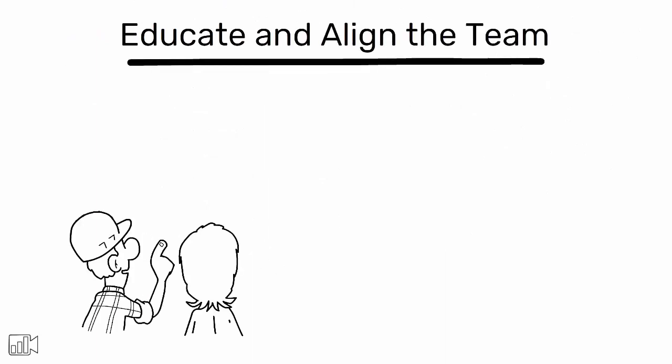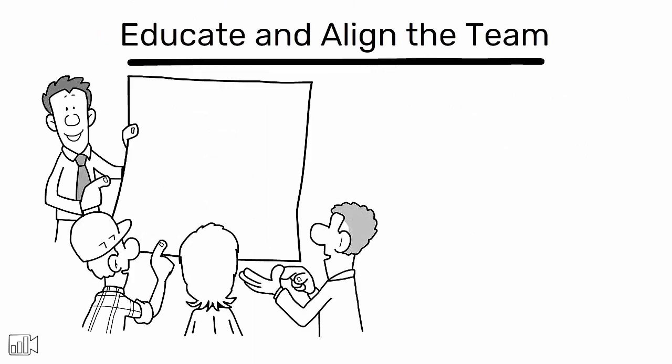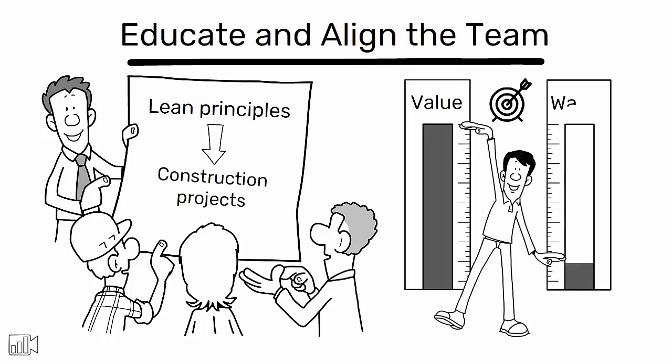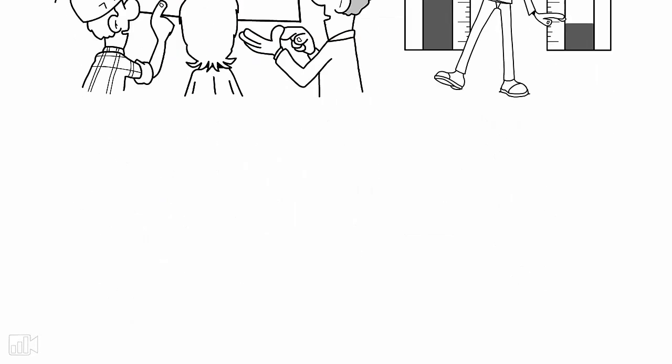First, educate and align the team. Begin by educating the project team, including all stakeholders, on lean principles and the value they bring to construction projects. Ensure that everyone understands the goals of lean construction, such as maximizing value and minimizing waste.